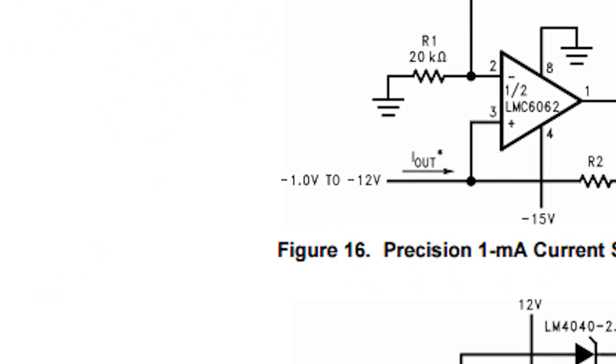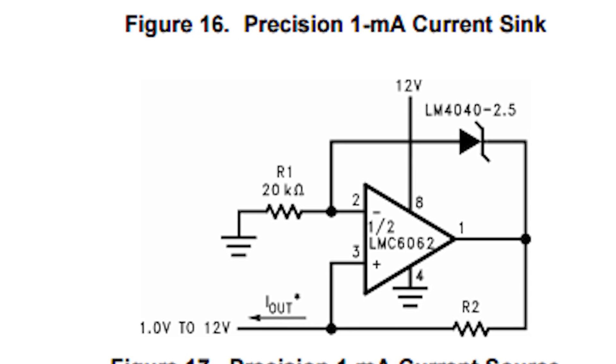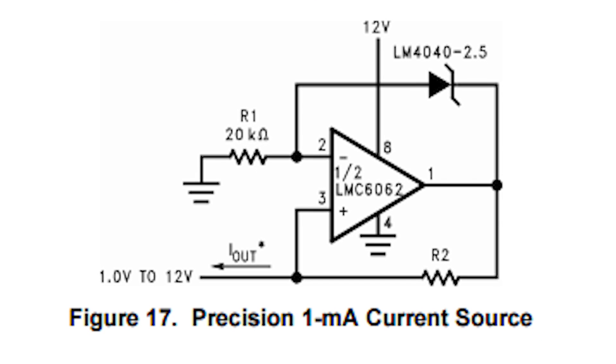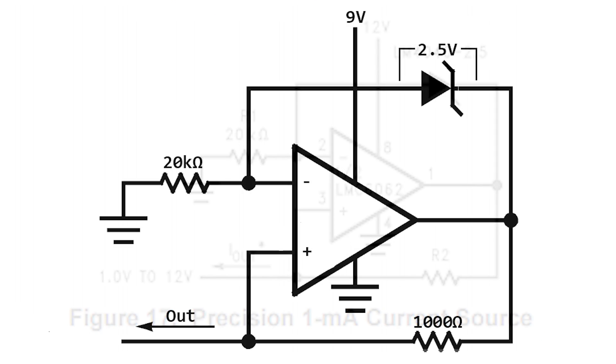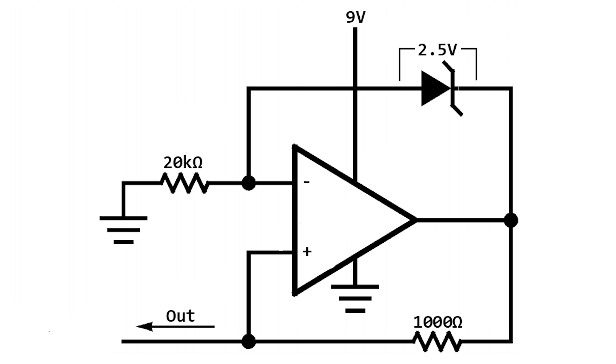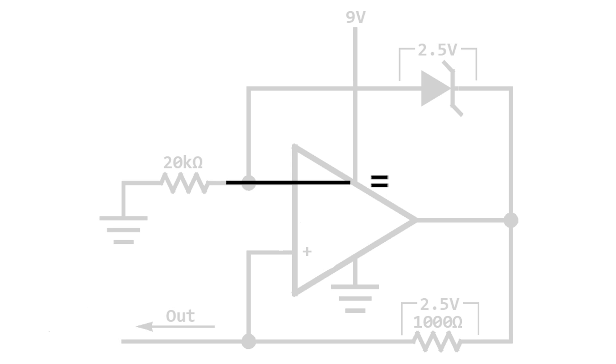The current source was an afterthought, but I decided to use one of the application designs in the voltage reference data sheet to give me a precision current source. The current source works by the op-amp doing whatever is needed to keep the voltage drop across the resistor the same as the drop across the voltage reference. And as I equals V/R, the current flowing through the resistor will be 2.5 divided by 1000, which gives us 2.5 milliamps.